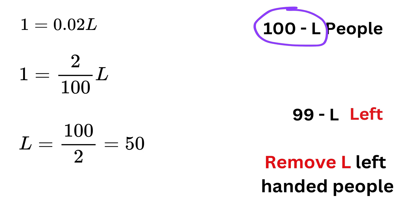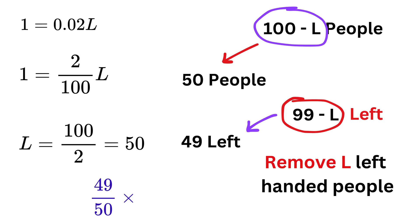Awesome! Let us try it out. If we remove 50 left-handed people, then we are left with a total of 50 people, out of which 99 minus 50, or 49, will be left-handed. So, the percentage equals 49 over 50 times 100, or 98%. And that's it.